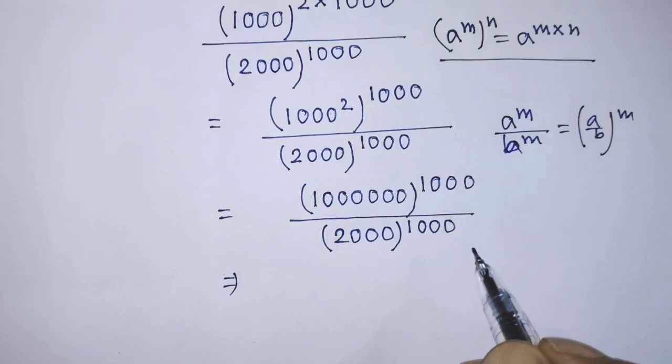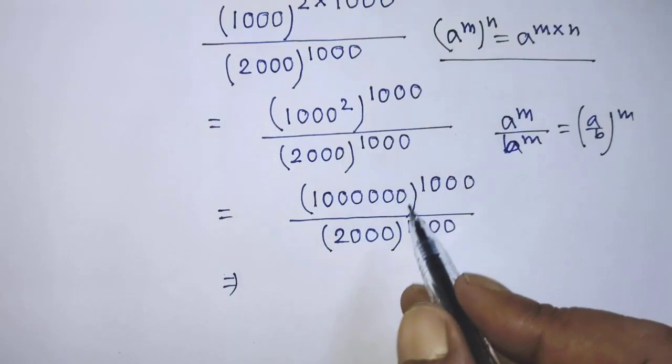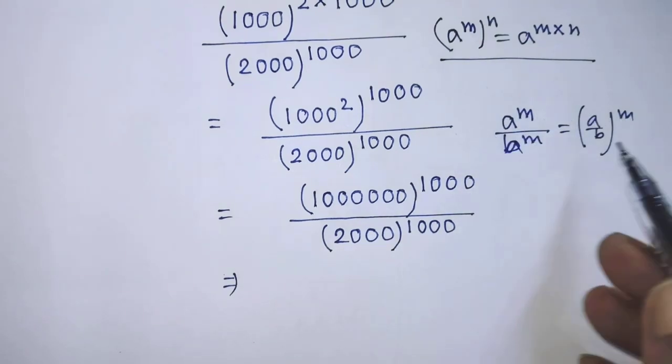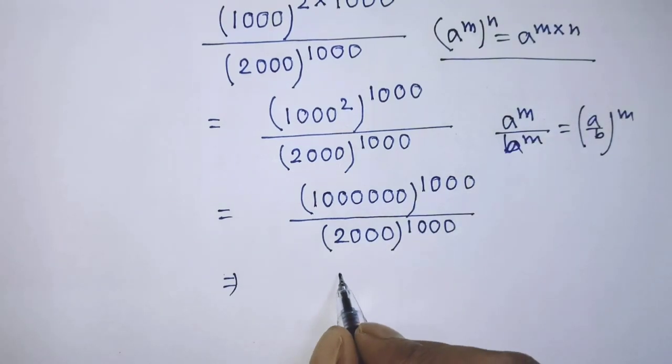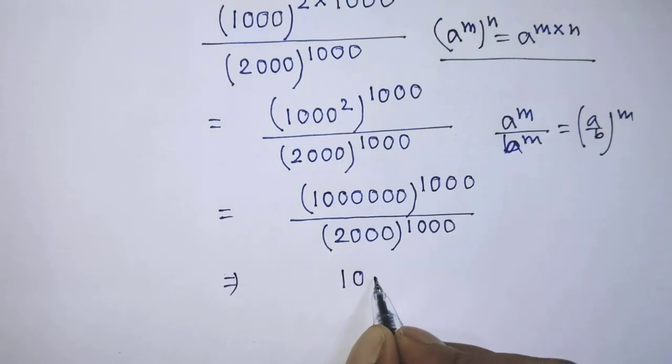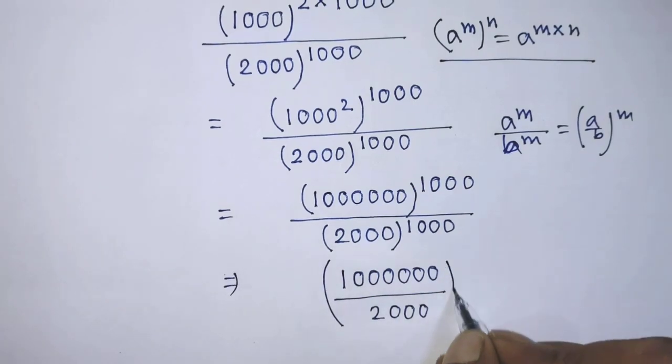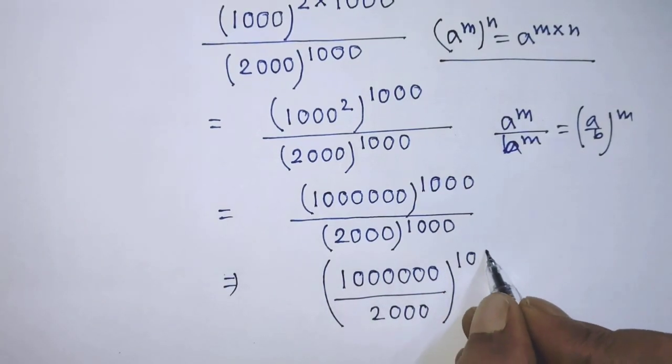In numerator and denominator, the power of both exponential form are same. So, according to this formula, it will be 10 lakhs over 2000 whole to the power 1000.